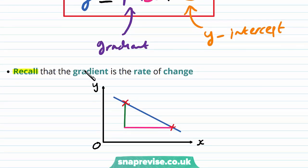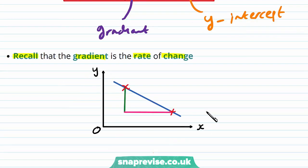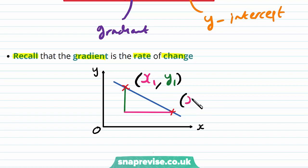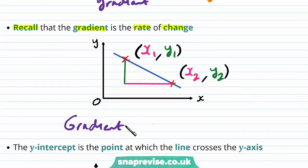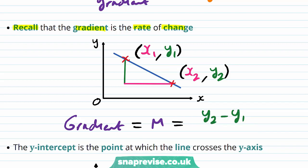Recall that the gradient is the rate of change. If we have two points on the graph — x1, y1 and x2, y2 — then we can calculate the gradient of this line. We often write this as equal to m, and the formula is y2 minus y1 divided by x2 minus x1.